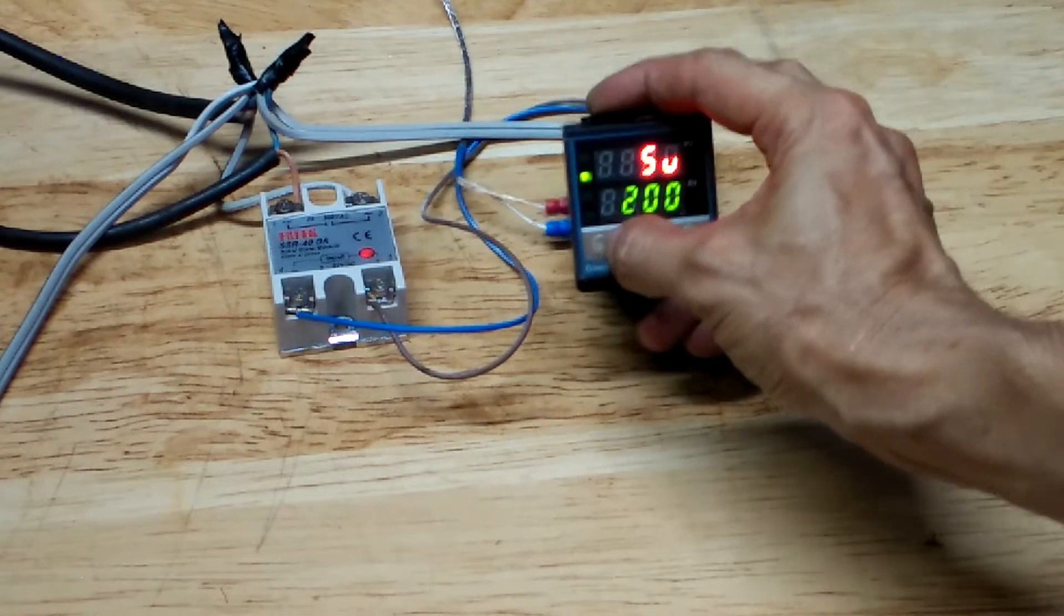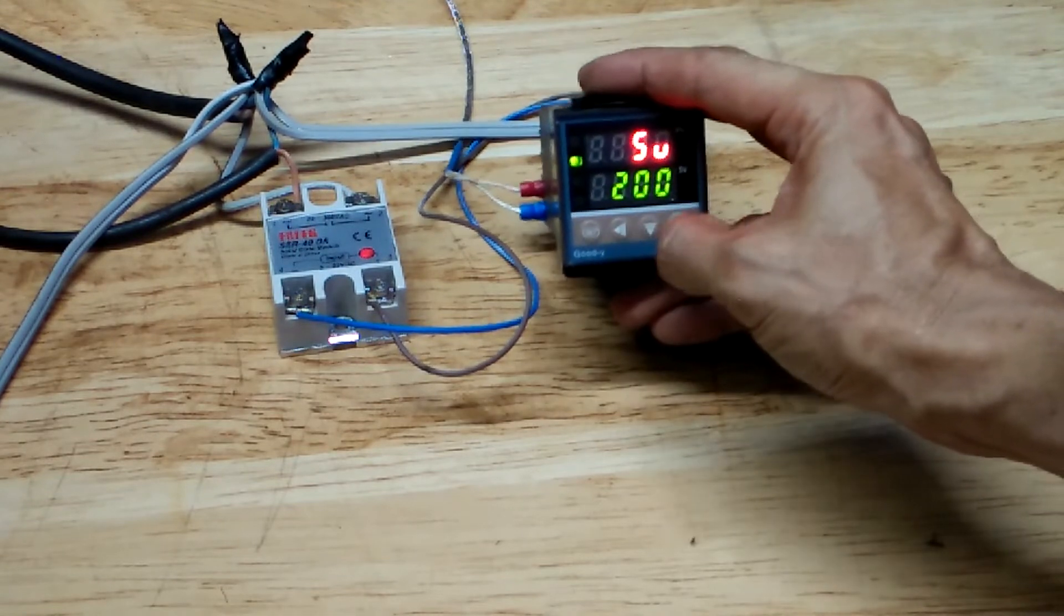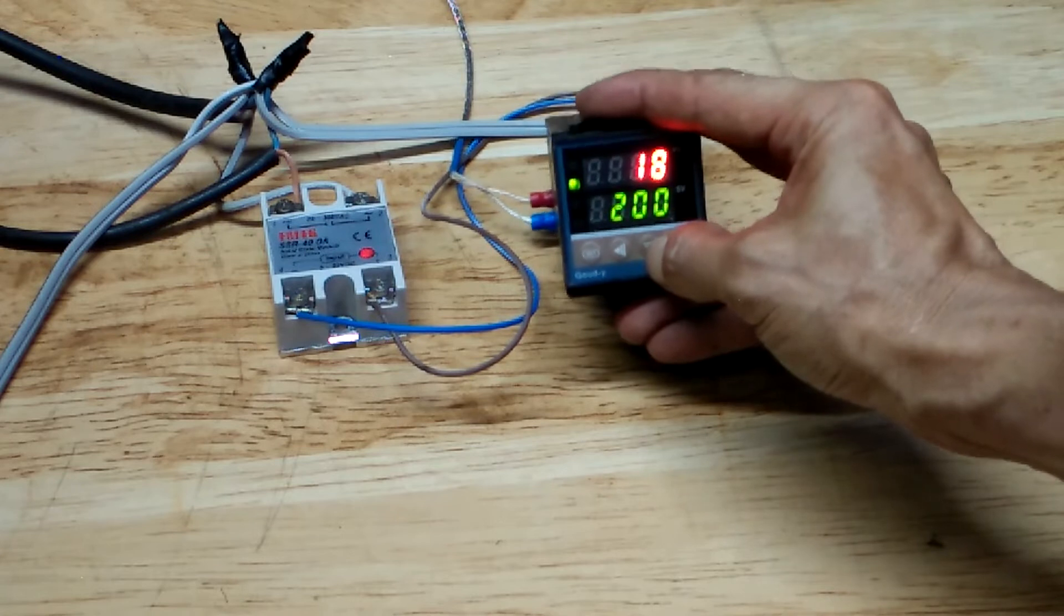I set it to 200 degrees Celsius, which is normally the temperature needed for powder coating.